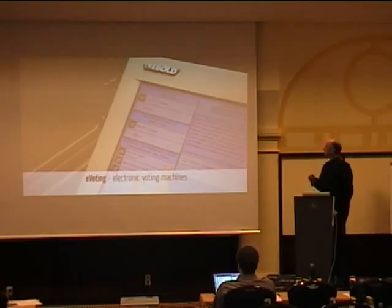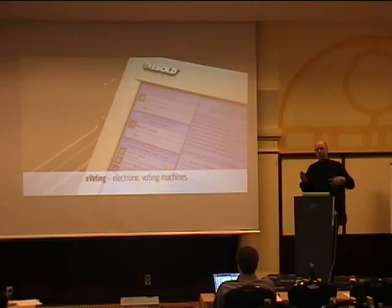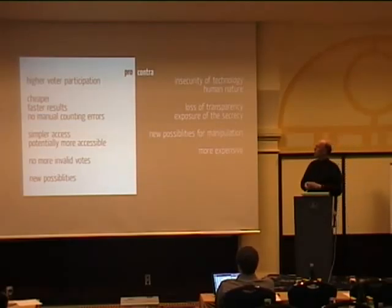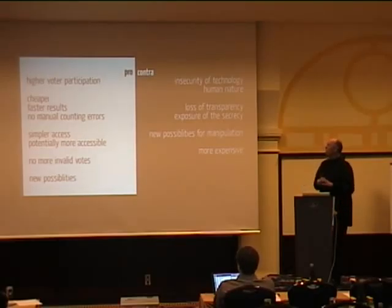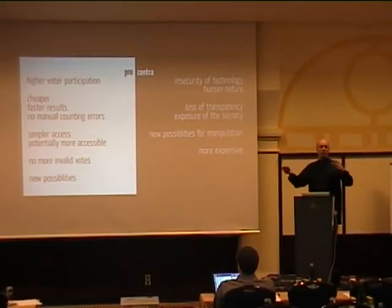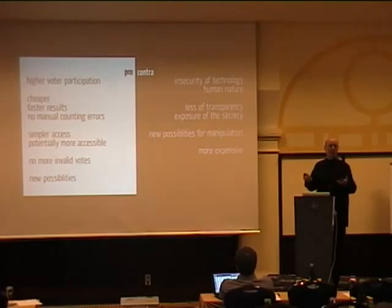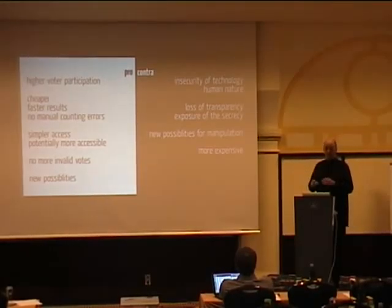There was much attention on the Diebold machines, so we'll concentrate on them for the technical aspects. In the discussion about electronic voting, you have pro-arguments and contra-arguments. People who are for electronic voting say: higher voter participation, cheaper, faster results — the moment you close the last polling station you have the full results — no manual counting errors, simpler access, potentially more accessible for disabled people. They say you have no more invalid votes, which is interesting — you can build electronic voting so you cannot cast invalid votes. But is it a right to cast an invalid vote? That's a different discussion.